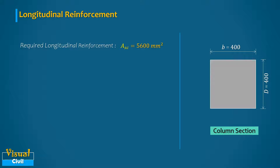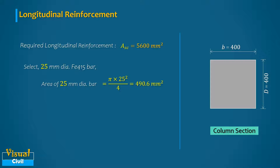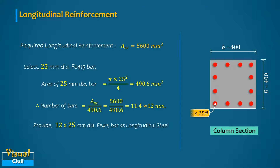For longitudinal reinforcement, select 25 mm diameter bars with a cross-sectional area of 490.6 mm² each. Calculating the number of bars and rounding to an even number, provide 12 bars of 25 mm diameter as longitudinal reinforcement. The total area of steel provided across all faces is 5887 mm².